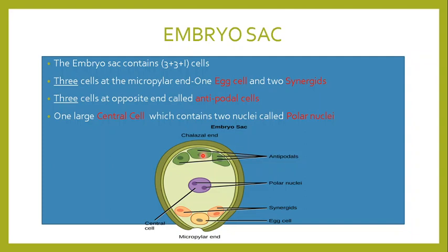At the opposite end there are three cells, and the name given to them is antipodal cells, or antipodals. At the center there is a large central cell. The central cell contains two nuclei, known as the polar nuclei. There are two polar nuclei at the center.